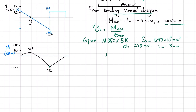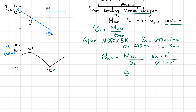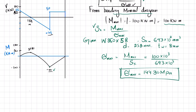Now we calculate the maximum bending stress. Maximum bending stress equals the maximum bending moment divided by Sx. The maximum bending moment is 100 kN·m, so that is 100×10³ divided by 693×10³, which gives a maximum bending stress of 144.30 MPa.